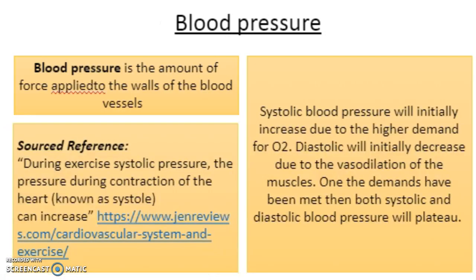Blood pressure during steady state exercise: blood pressure is the amount of force applied to the walls of the blood vessels. Systolic blood pressure will initially increase due to the higher demand for oxygen. Diastolic blood pressure will initially decrease due to the faster dilation of the blood vessels. Once the demand has been met, both systolic and diastolic blood pressure will plateau.